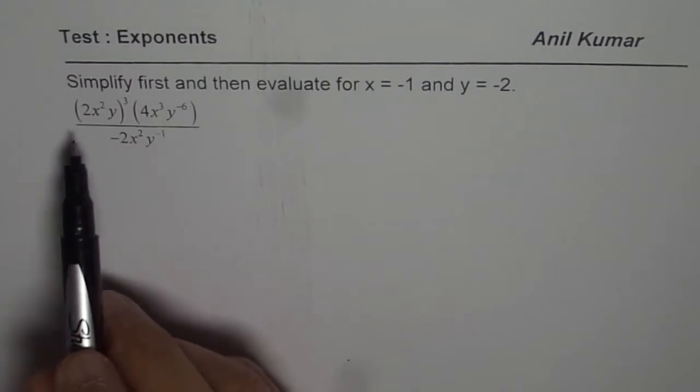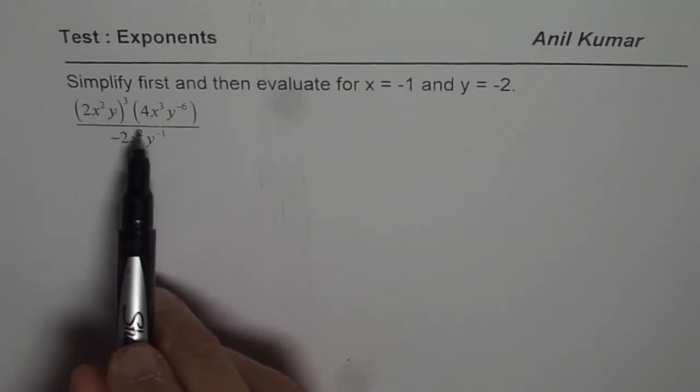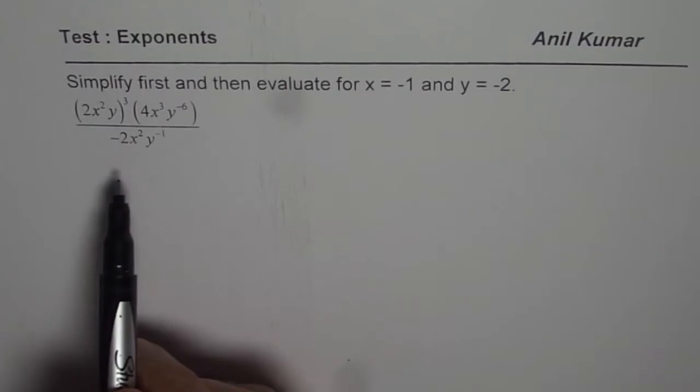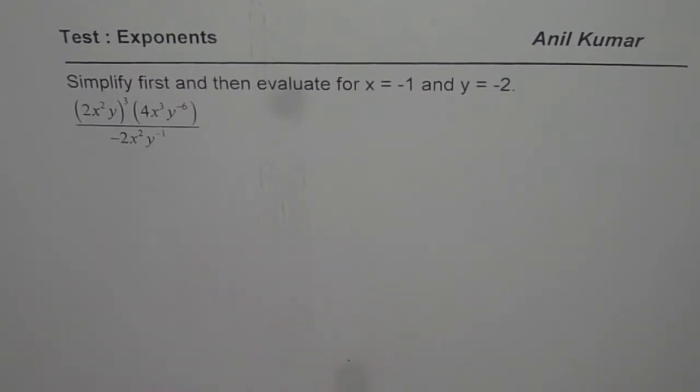The expression given to us is 2x square y whole cube, 4x cube y to the power of minus 6, divided by minus 2x square y to the power of minus 1.